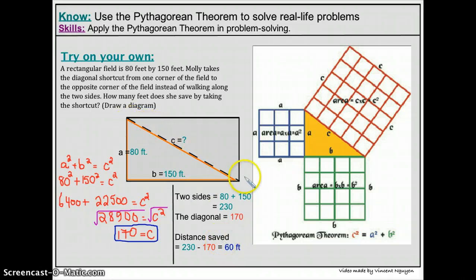So the difference between 230 and 170 is 60 feet. So if she were to take the diagonal instead of walking these two sides, she would save 60 feet instead.